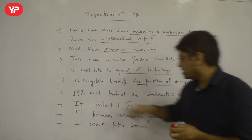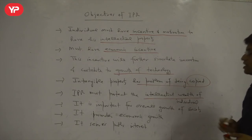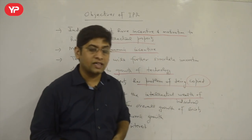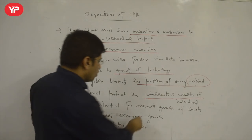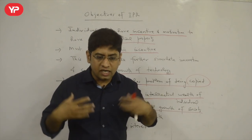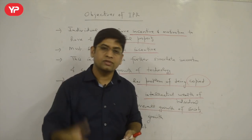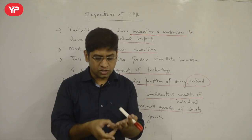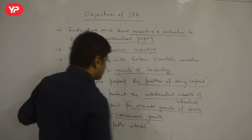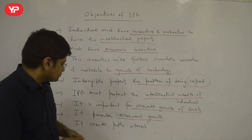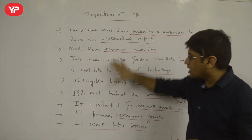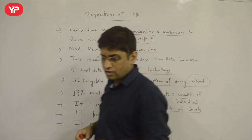IPR should also protect the intellectual property of the individual. Intellectual wealth is an individual's asset, and I must protect this wealth because it is something they have created. It is important for the overall growth of society — because if an individual is putting in effort and creating new things, then culturally, economically, there are all-round benefits for society. IPR promotes economic growth and also serves the public interest. These are the objectives and benefits of IPR.